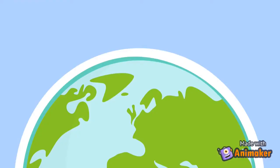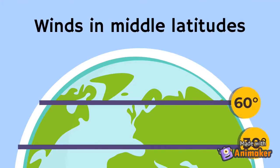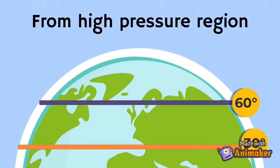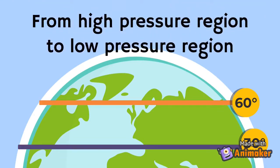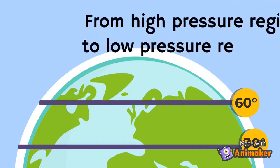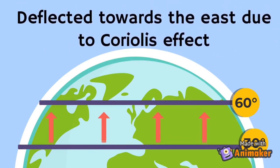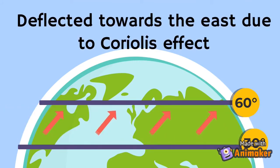Westerlies are winds in the middle latitudes between 30 and 60 degree latitudes. They tend to blow from high-pressure regions around the horse latitude to the low-pressure region around the polar circle latitude. During its travel, Westerlies are deflected to the east due to the Coriolis effect.